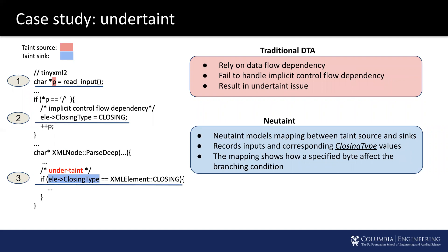Next, we look at an under-taint issue from a simple XML parser. At line one, it reads user input as a taint source, then checks if a specified byte in the taint source and sets the parsing flag accordingly. Later, at line three, the parsing flag is used as a conditional variable to determine branching behavior. Most rule-based dynamic taint analysis tools fail to capture this tainted information. NeuTaint directly models the taint source and sink by recording values for the user input and corresponding parsing flag, and the learned mapping shows how a specified byte affects the branching condition.